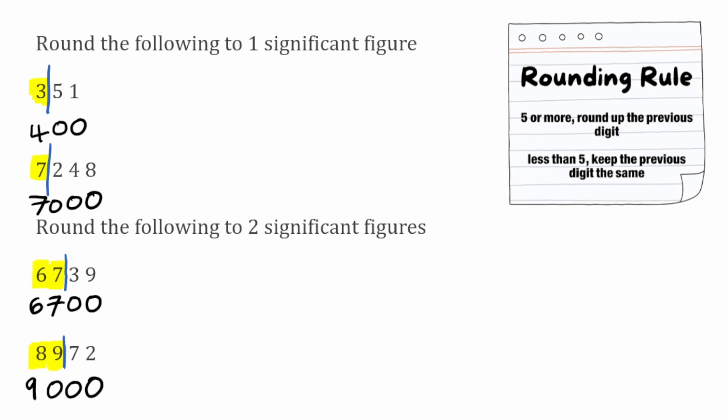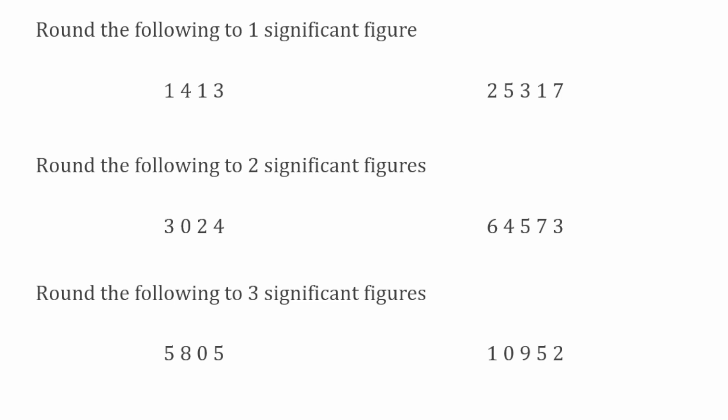Well done if you followed along with those examples. We're now going to take a look at some practice questions — feel free to pause the video and have a go. For the first questions we're rounding to one significant figure. Starting with 1,413: the first significant figure is 1. We put our line between the 1 and the 4. Looking to the right we have a 4, which means we keep the previous digit the same, so the 1 remains as a 1. Filling in the placeholders, the answer is 1,000.